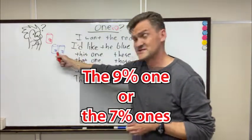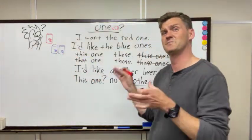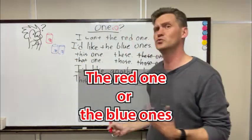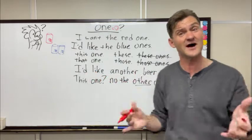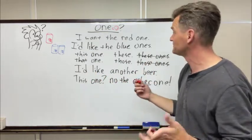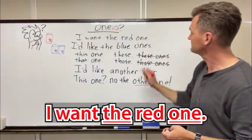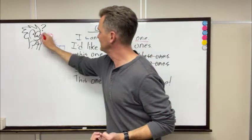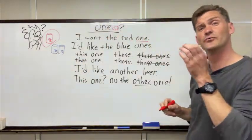The red one, the blue ones, right? So how to use 'ones' correctly in English. Here he says 'I want the red one' - maybe he decides that one, he wants the red one.